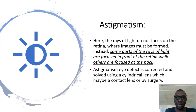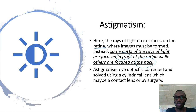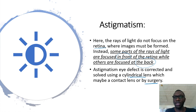The last defect we shall discuss today is astigmatism. Astigmatism is not the same as myopia, not the same as hyperopia, but combines the two. Here, the rays of light do not focus at the retina — they should always focus at the retina. Some parts of the rays are focused in front of the retina and others are formed behind it. So we have images formed both in front of and behind the retina. This can be solved using a cylindrical lens or through surgery. All these eye defects can be corrected using different eye lenses.